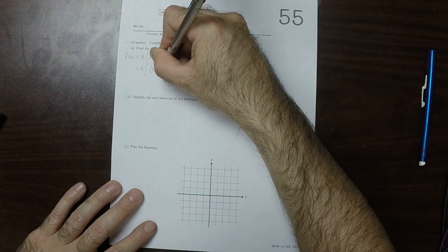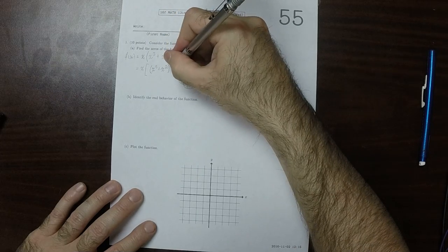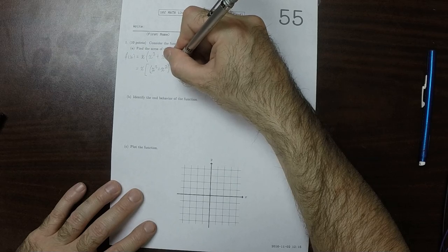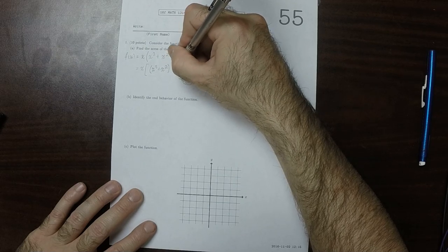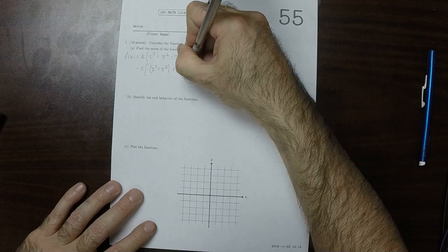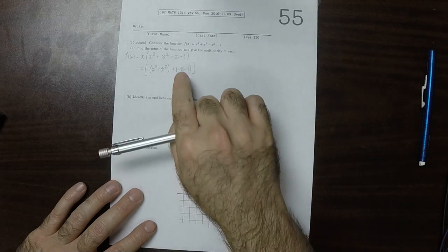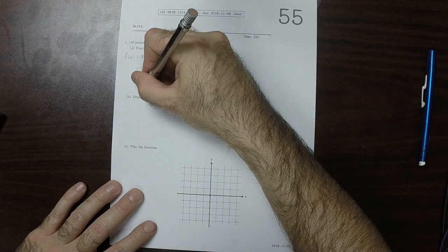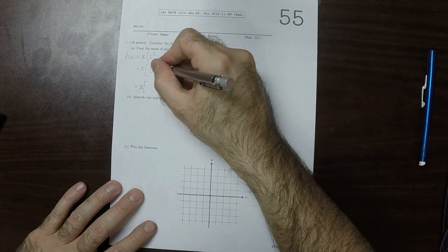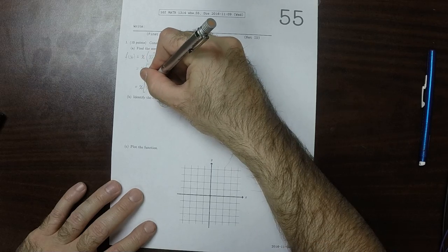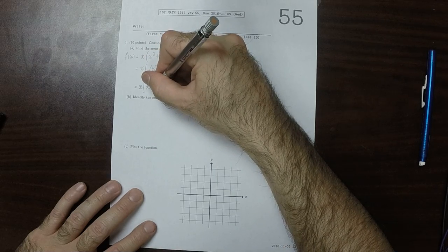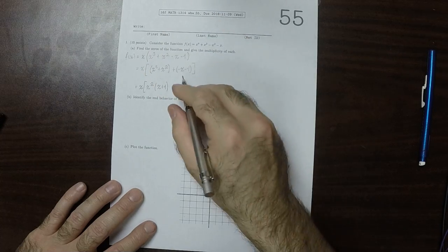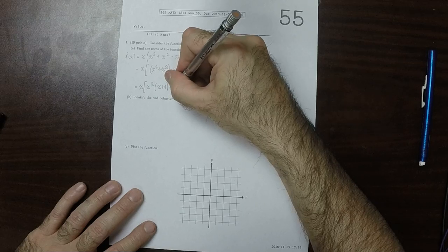x cubed plus x squared, and then plus negative x minus 1. And then within each group, factor out the greatest common factor. So the greatest common factor in the first group is x squared. And then that would be x plus 1, and then negative 1 is the greatest common factor in the second group.